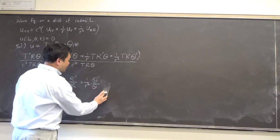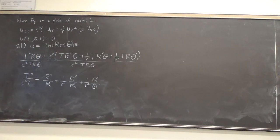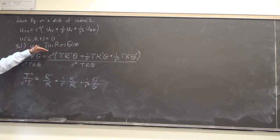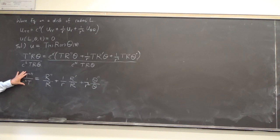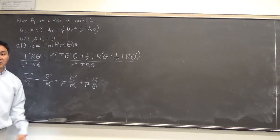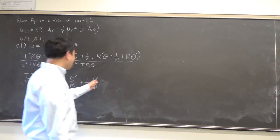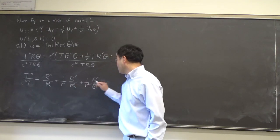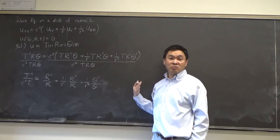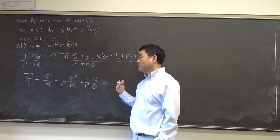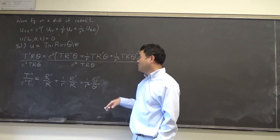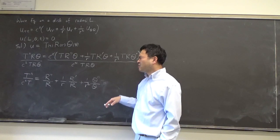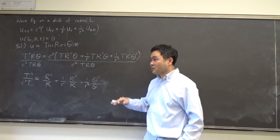The immediate consequence is that the left side is a function of t only, whereas the right side is a function of r and theta. This equals a constant — the Helmholtz eigenvalue problem. I explained before why this constant has to be negative. So we set it equal to negative lambda squared. And I'm going to use mu for the other separation constant. So this equals negative lambda squared.